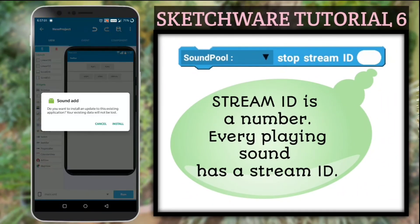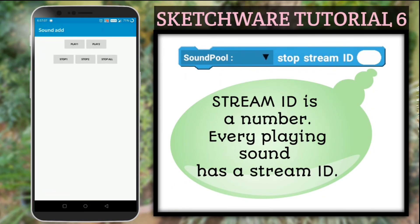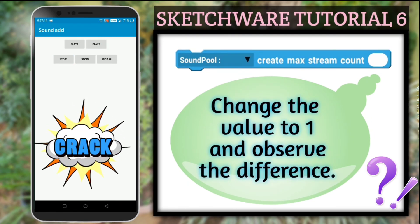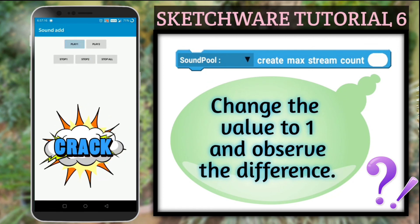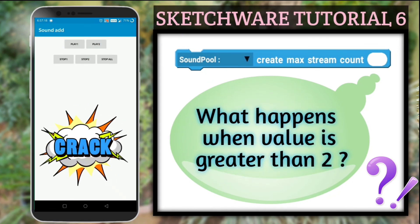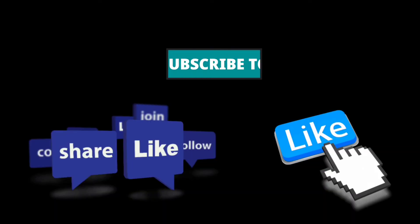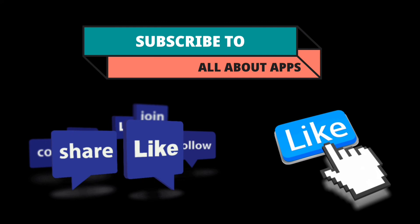Now let's run this app and see what it sounds like. You can actually try what happens when you give 1 instead of 2 in the first block, and what happens when you enter a number greater than 2. If you note the difference, mention that in the comments so that it will be helpful for others. Also, if you have any doubts or questions on the sound block, mention that in the comments and I will try to answer them. I hope this video was helpful — please subscribe and leave a like. Thanks for watching and have a nice day.